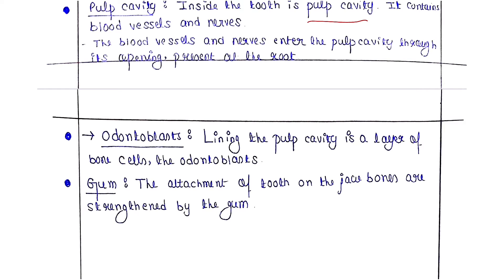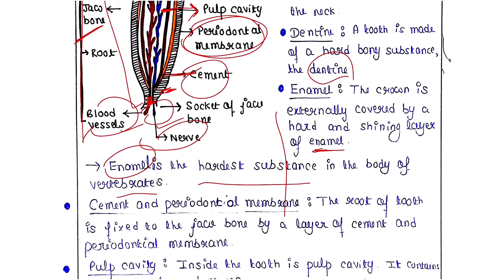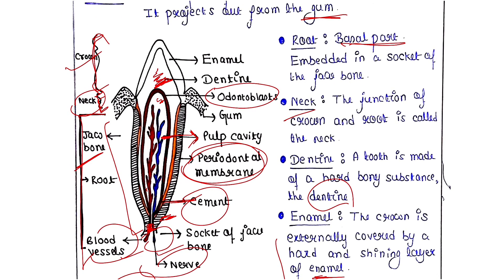The attachment of the tooth to the jawbone is strengthened by the gum. Here you can see the gum part supporting the tooth. The upper part of the tooth that projects above the gum — the only part visible from outside — is the crown. That is the structure of the tooth.